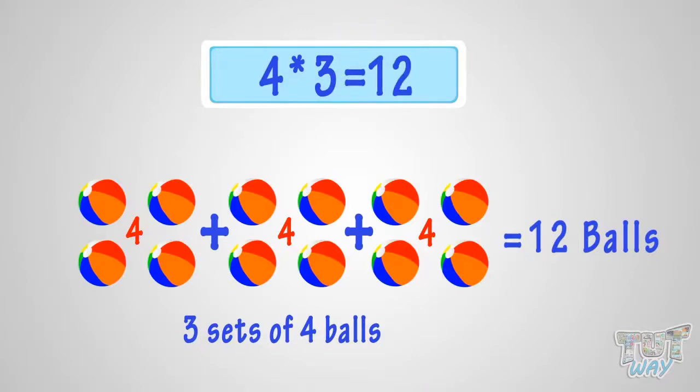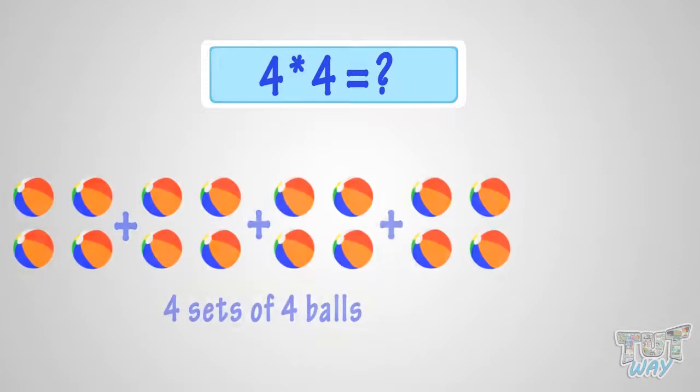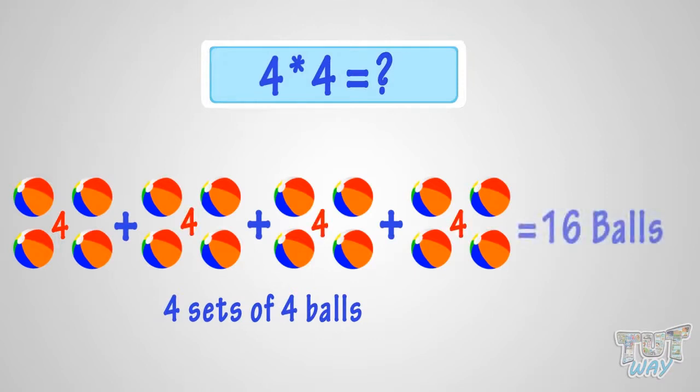What is four multiplied with four? It is the same as four sets of four balls. Four plus four plus four plus four equals sixteen. So, it is sixteen balls. That is, four multiplied by four is sixteen.